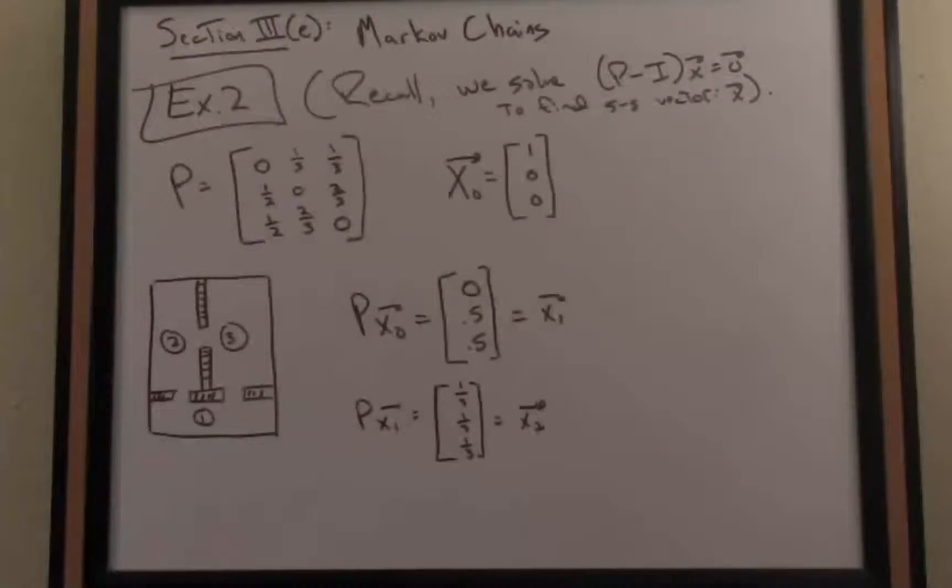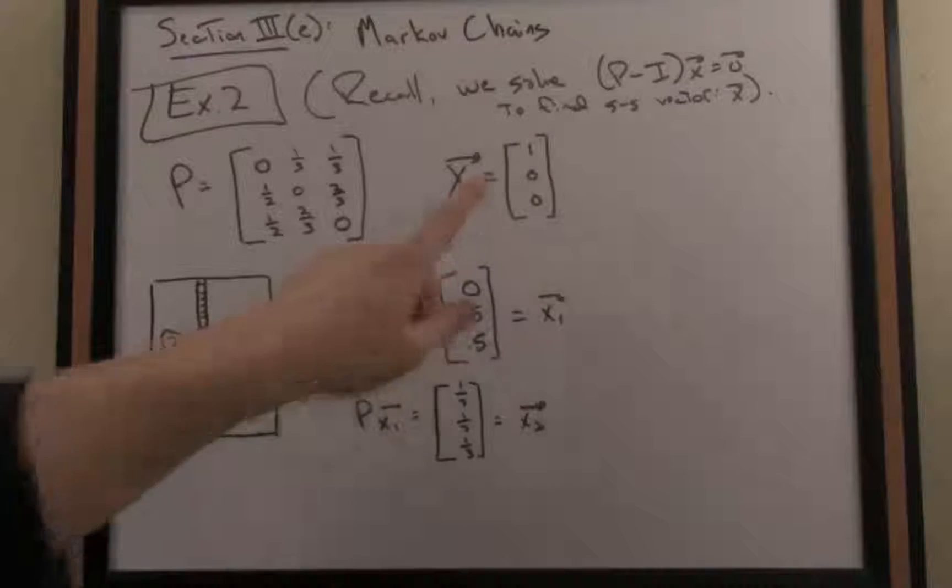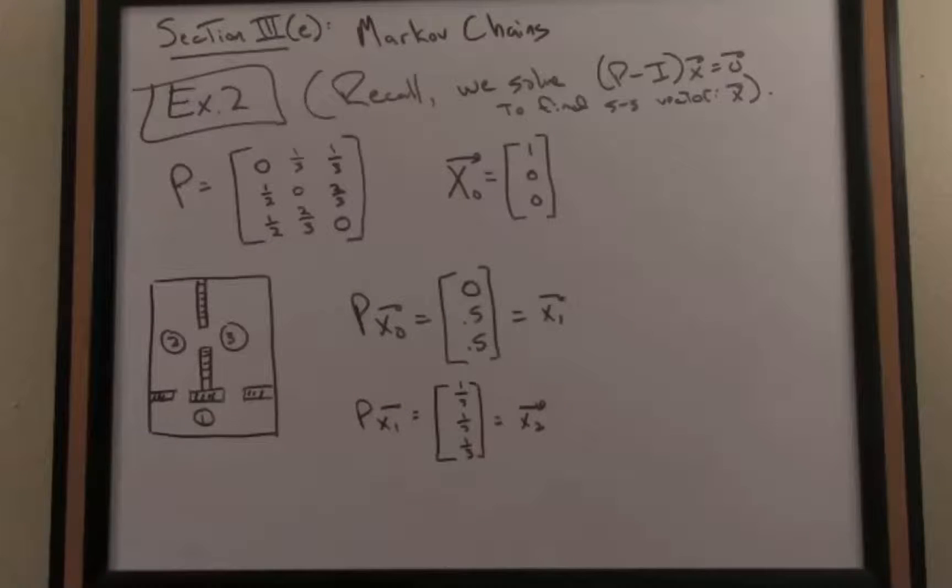Before we solve for the steady-state vector for this particular problem, just to get the mechanics down, let's plug in a vector or two and do some calculations for this Markov chain. You'll recall that our stochastic matrix P is given as follows. Let's suppose that our initial state vector is 1, 0, 0, so the mouse starts in room one.